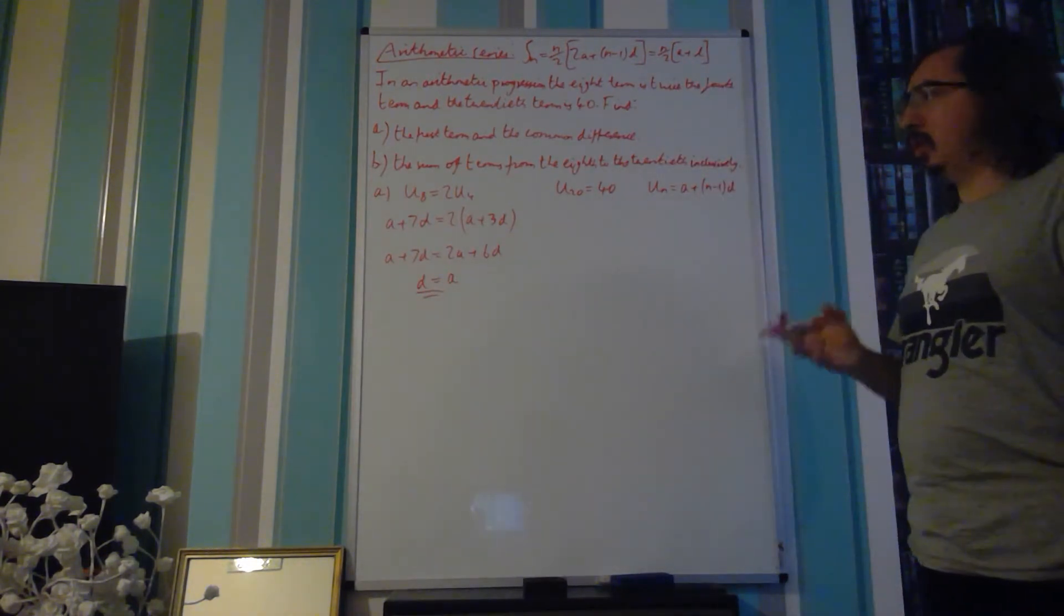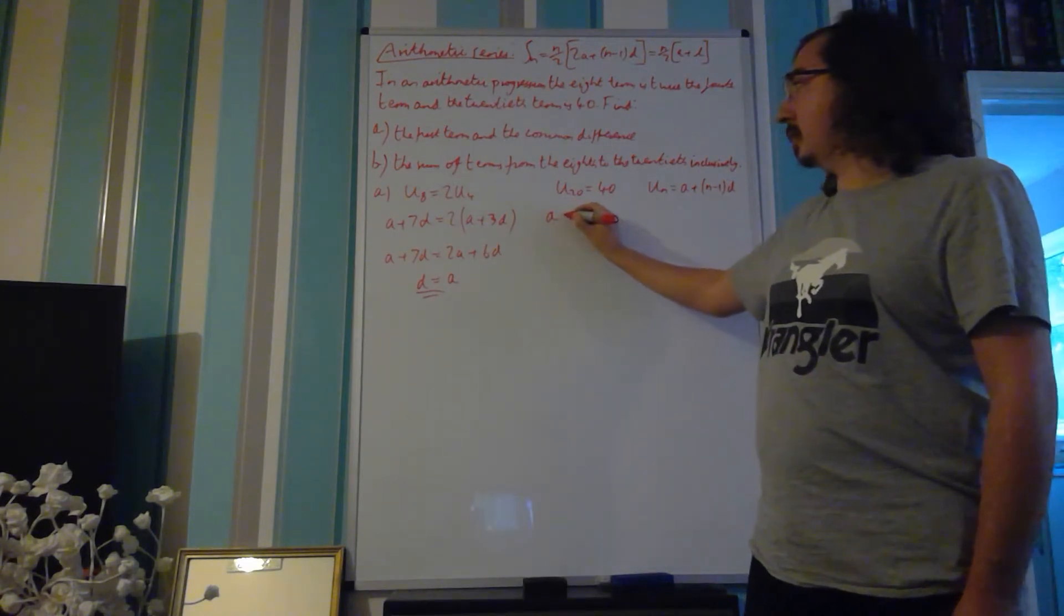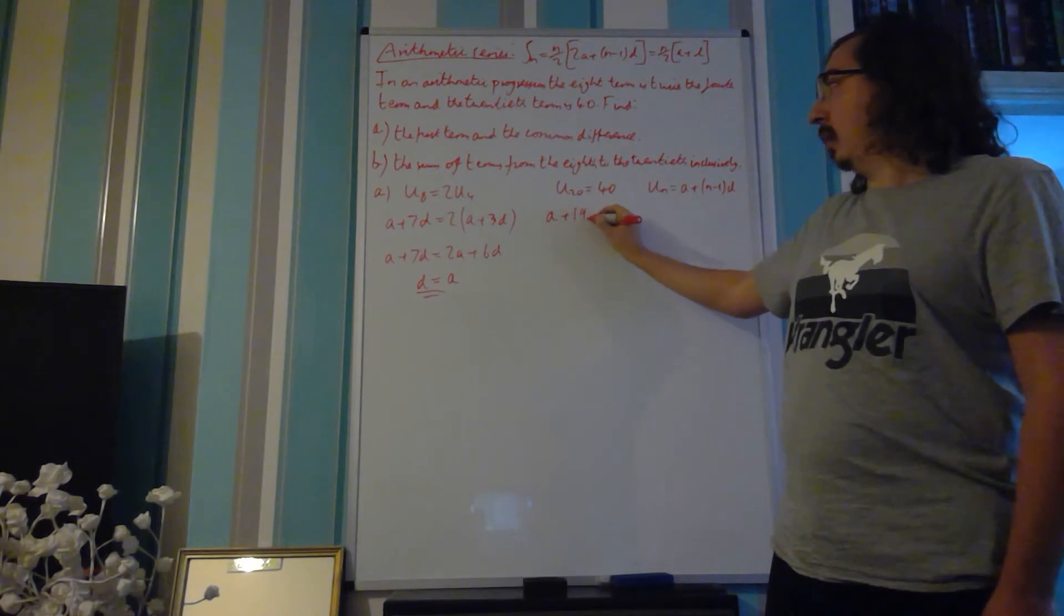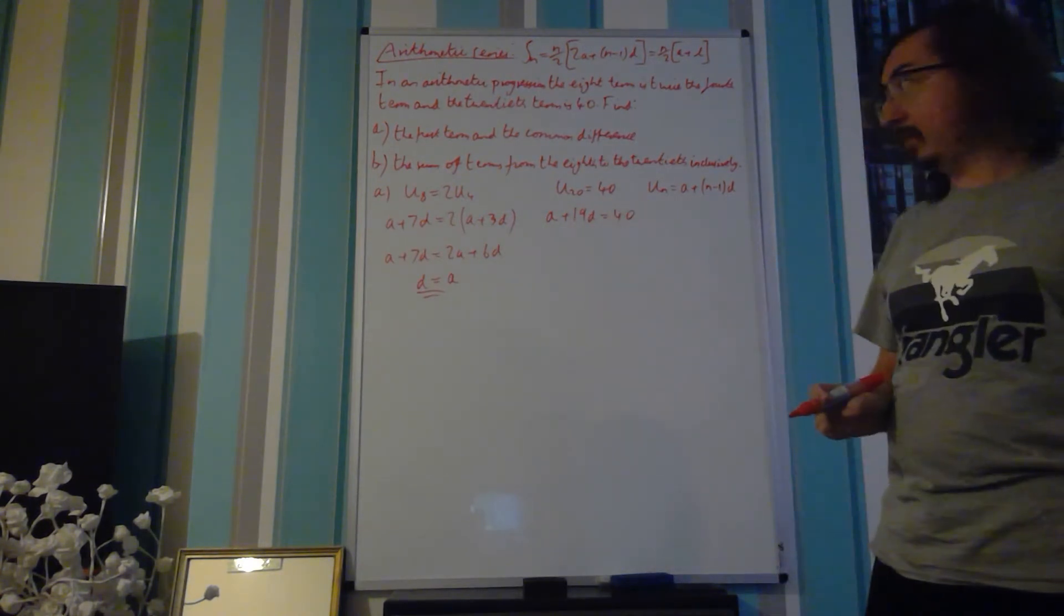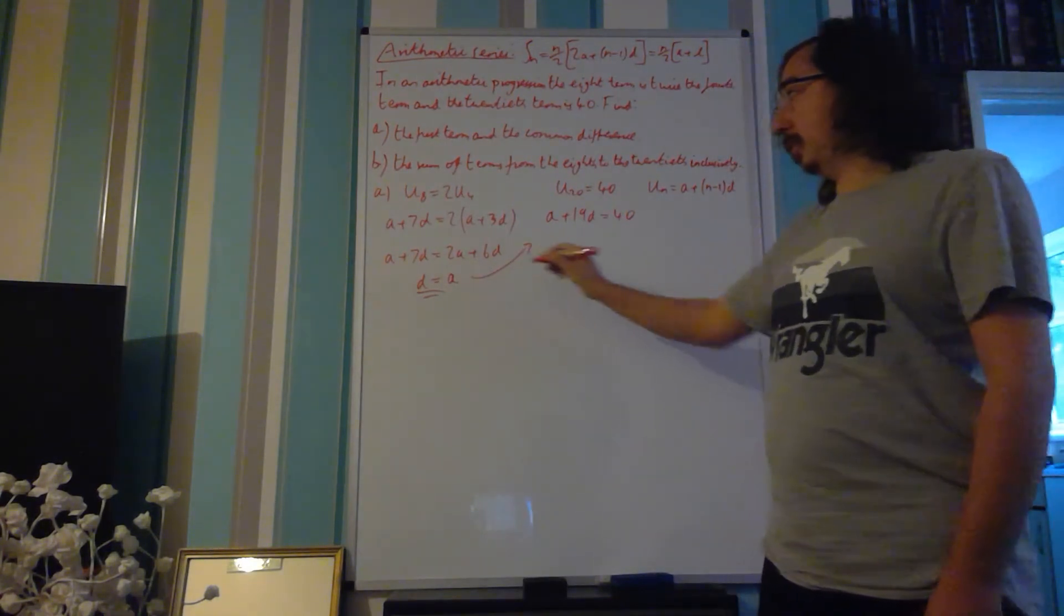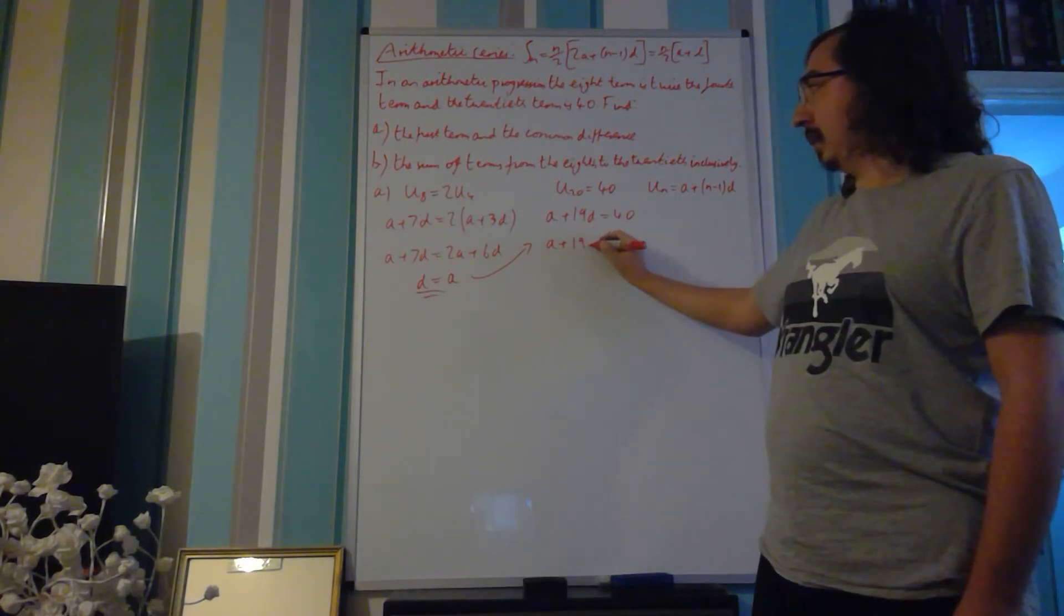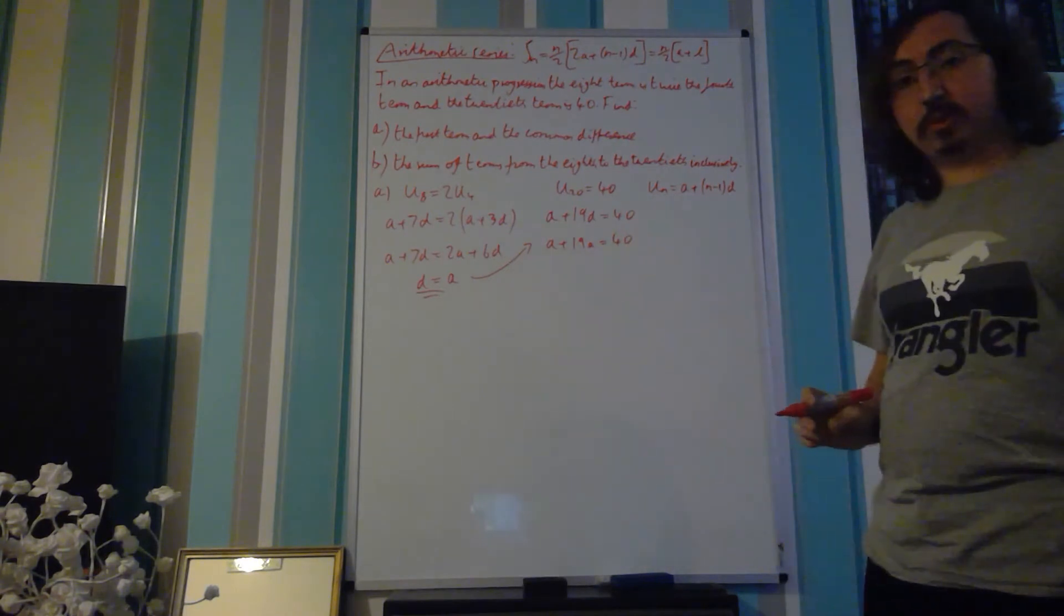So, moving on to U20 is equal to 40, similar idea again, using the nth term, A plus 20 minus 1, 19D, is equal to 40. If we substitute in D is equal to A, we can say that A plus 19, replace the D with A, so 19A, is equal to 40.